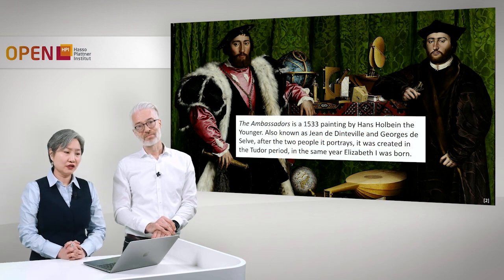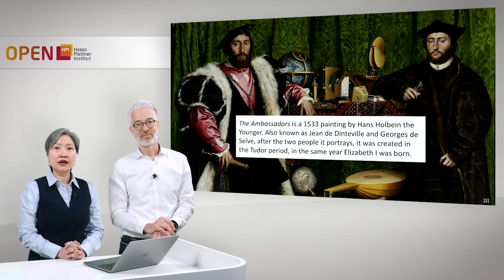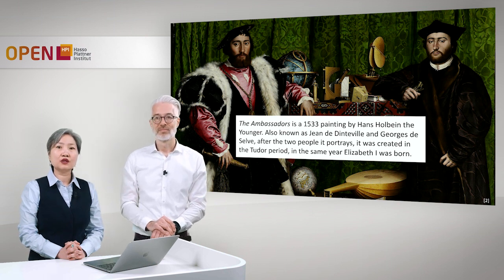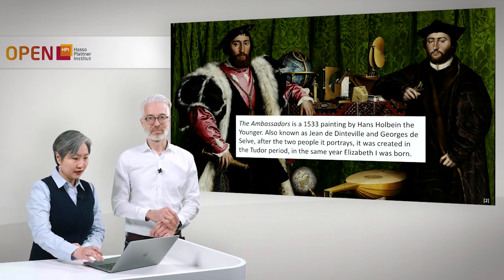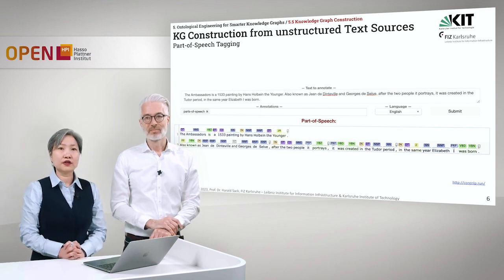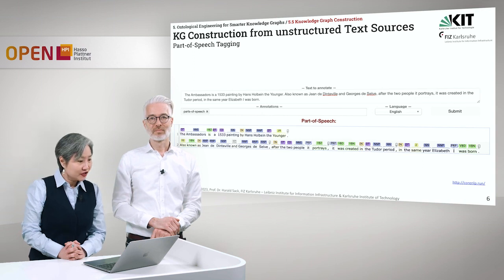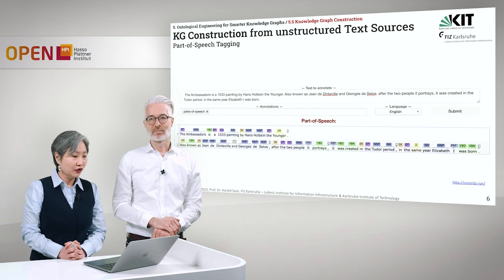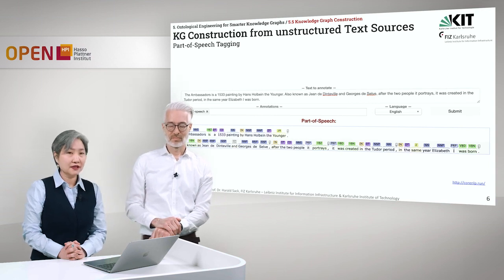Let's say we have this unstructured text: 'The Ambassadors is a 1533 painting by Hans Holbein the Younger, also known as Jean de Dinteville and Georges de Selve after the two people it portrays. It was created in the Tudor period in the same year Elizabeth I was born.' So we have two sentences here. The first NLP technique we are showing is part-of-speech tagging, which involves looking at each token and classifying it according to its part-of-speech tag — for example, 'the' is tagged as a determiner.